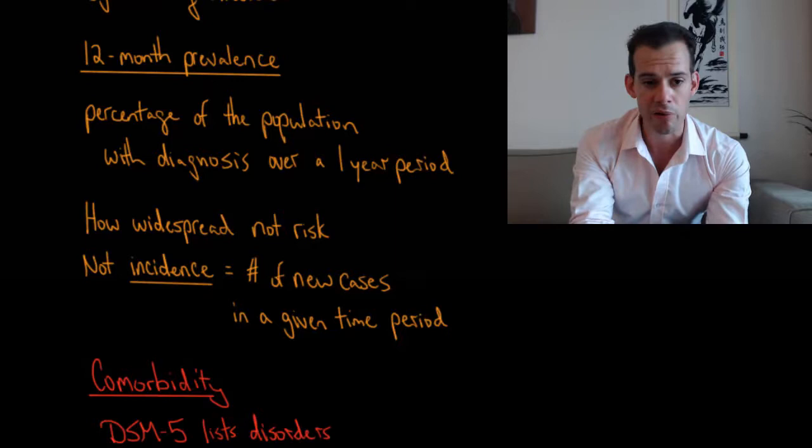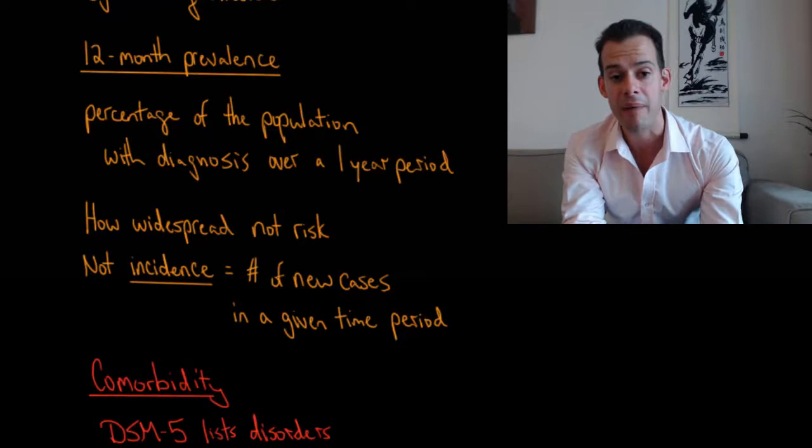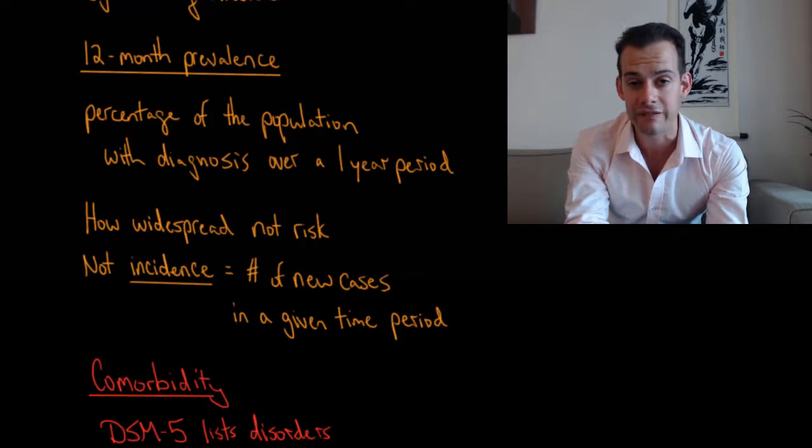So what I mean by that is if you look at a particular disorder and you see it has a 12-month prevalence of 10%, what that indicates is that 10% of the population has that diagnosis over the course of a year, but that doesn't mean that you have a 10% risk of contracting that disorder.